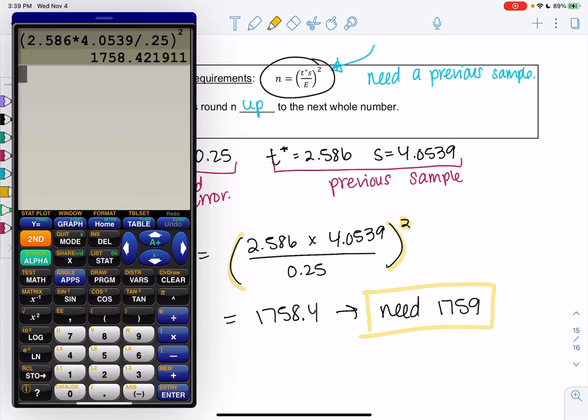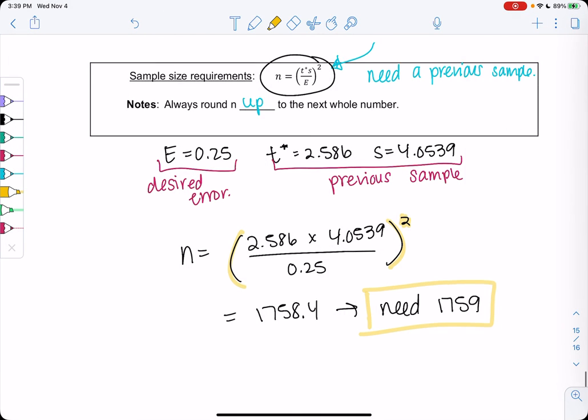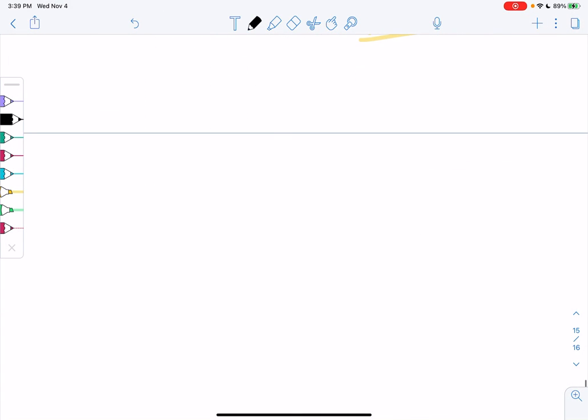The main thing is keep track if you have a proportion or a mean. Anytime I'm doing a confidence interval before we end this chapter, step one is proportion land or mean land. Don't mix and match. One or the other. Can't be in both.